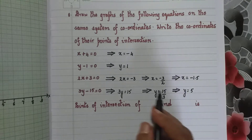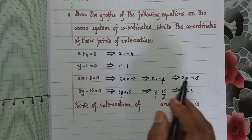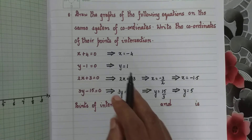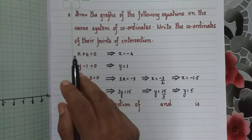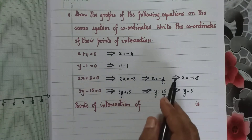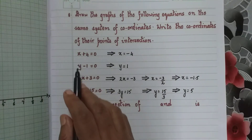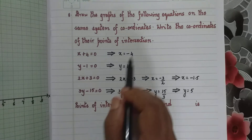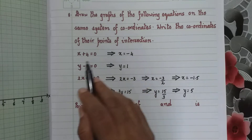You have seen here all the equations have been changed to x equal to a constant or y equal to a constant. But when we draw the graph of these lines, we will always write the original equation as given — we will not write the simplified versions. We write the original equation according to what is given.